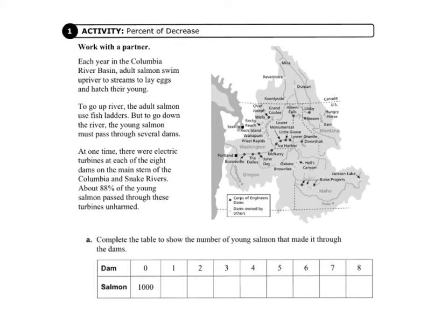Today we're going to start on page 129 in your record and practice journal. We're going to be working on percent of decrease. Each year in the Columbia River Basin, adult salmon swim upriver to streams to lay eggs and hatch their young. To go upriver, the adult salmon use fish ladders, but to go down the river, the young salmon must pass through several dams. At one time, there were electric turbines at each of the eight dams on the main stem of the Columbia and Snake Rivers. About 88% of the young salmon passed through these turbines unharmed.